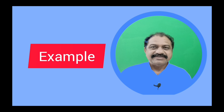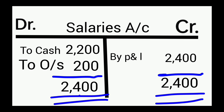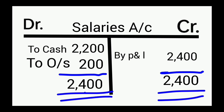Here are the journal entries. When salary of rupees 2,200 for 11 months has been paid, the journal entry is: Salaries Account Dr. 2,200 — To Cash Account 2,200. Therefore, in the salaries account debit side, we write 'To Cash 2,200.' The adjusting journal entry for outstanding salary of rupees 200 is: Salaries Account Dr. 200 — To Outstanding Salaries Account 200. Therefore, in the salaries account debit side, we write 'To Outstanding Salaries 200.'